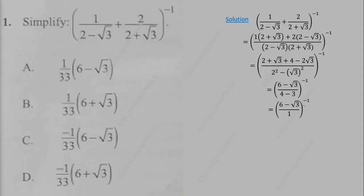Now we apply the law of indices. Because the exponent is negative, we reciprocate and change the sign to positive. If it were positive, there would be no need to reciprocate. Since it is negative, we do so and obtain the result.